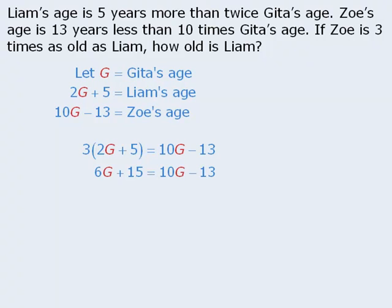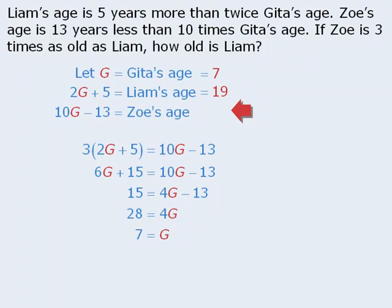First we can expand the left-hand side, then subtract 6g from both sides, then add 13 to both sides, and then divide both sides by 4 to get g equals 7. So Gita must be 7 years old. Since 2g + 5 represents Liam's age, if g equals 7, Liam must be 19 years old. And since 10g − 13 represents Zoe's age, Zoe must be 57 years old. We can confirm that 57 is indeed 3 times 19.